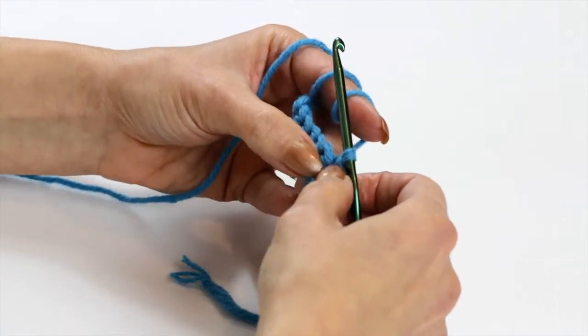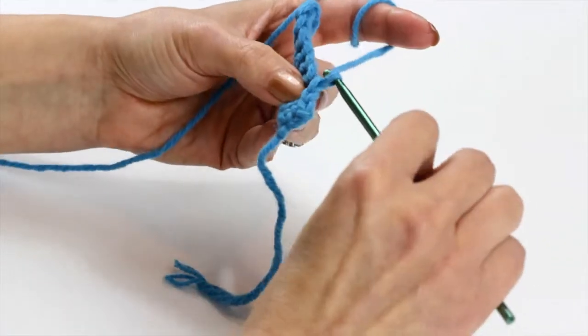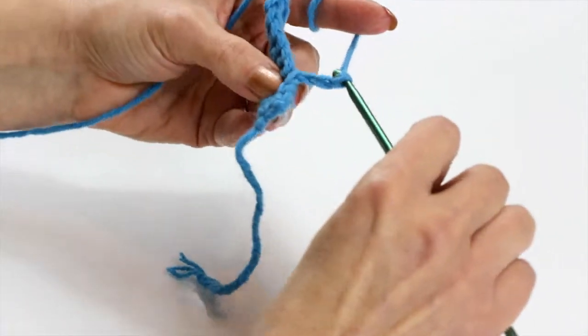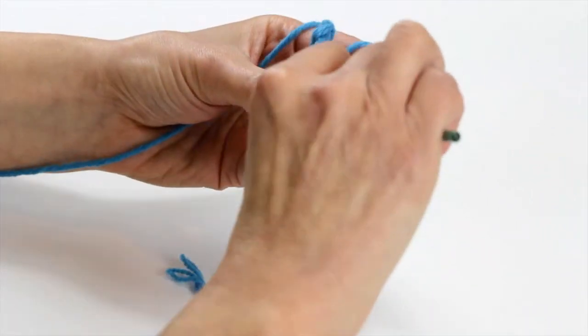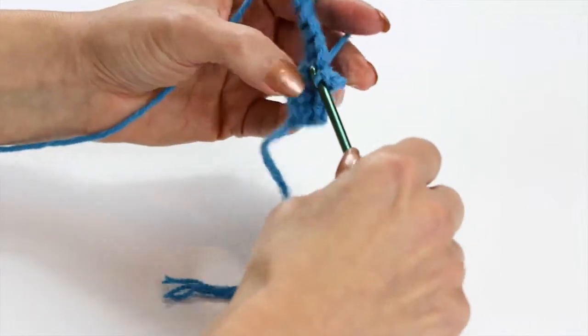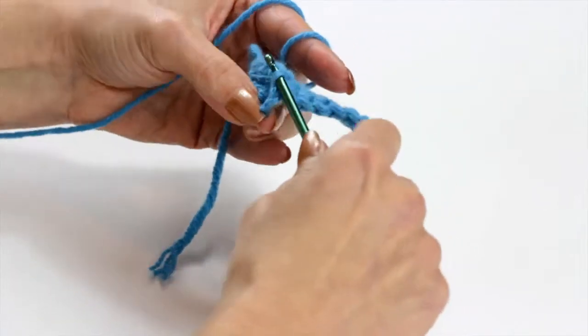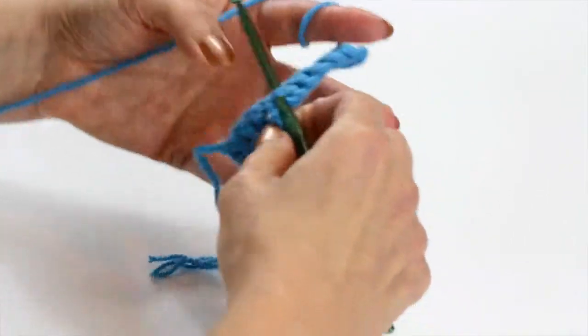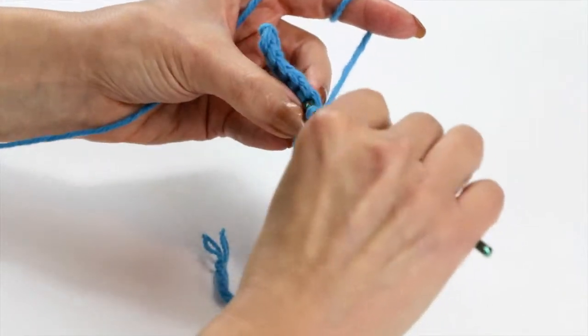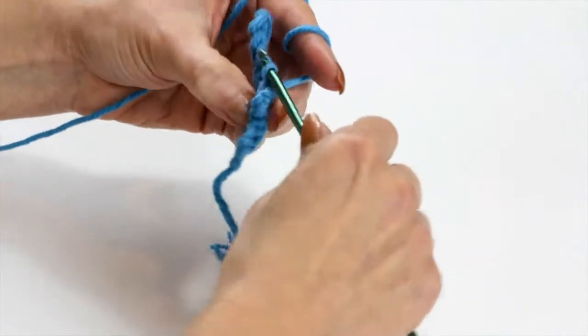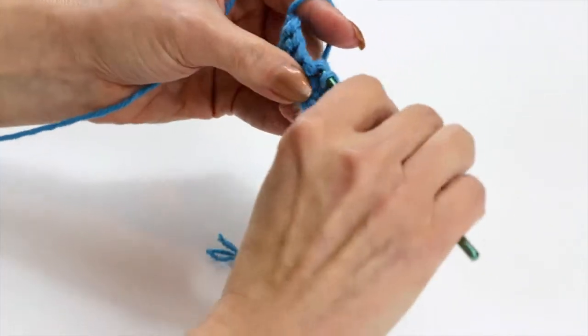And then when you're ready for the picot, it's just basically chaining three and inserting your hook back into the same stitch and slip stitching to close off the chain. Then keep slip stitching until the next picot stitch.